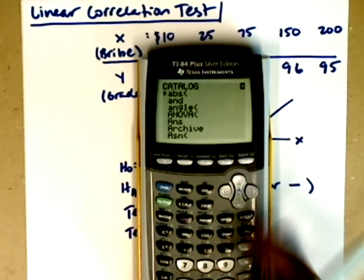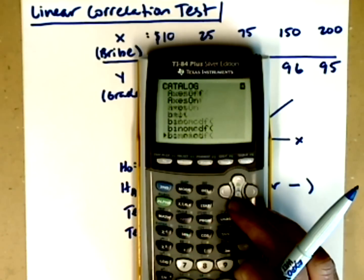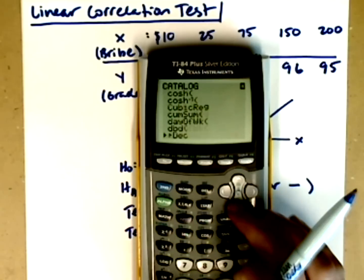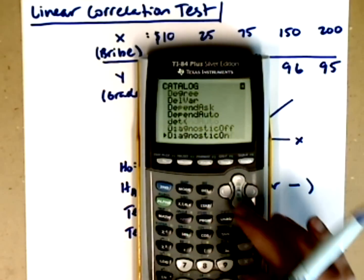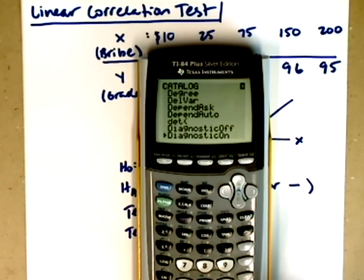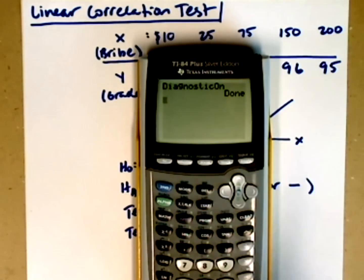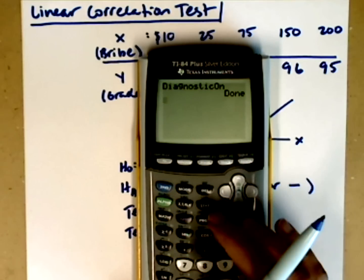I'm looking for diagnostic on. I'm on the A's, so scroll down however you want to until you get to the D's. There's quicker ways to do this, but I'm only going to the D's anyway. There it is, diagnostic on. That will give me the correlation coefficient when I ask it for a linear correlation. So I choose this, making sure the arrow's in front of it. Enter, enter again, and it says done. Now I'm ready to do a linear correlation.